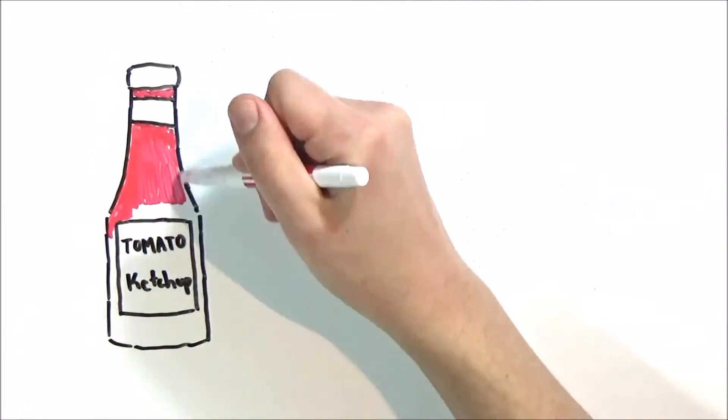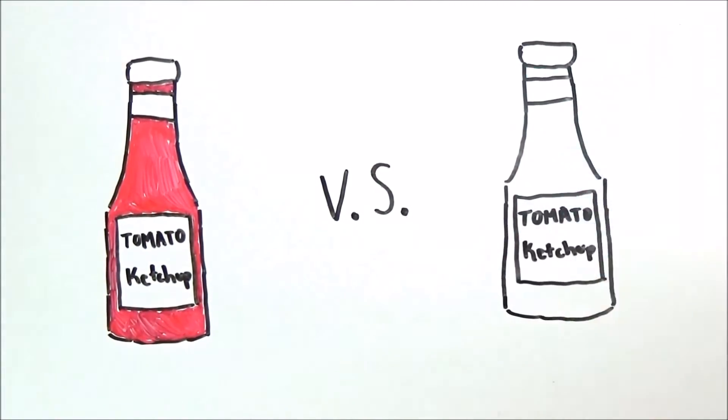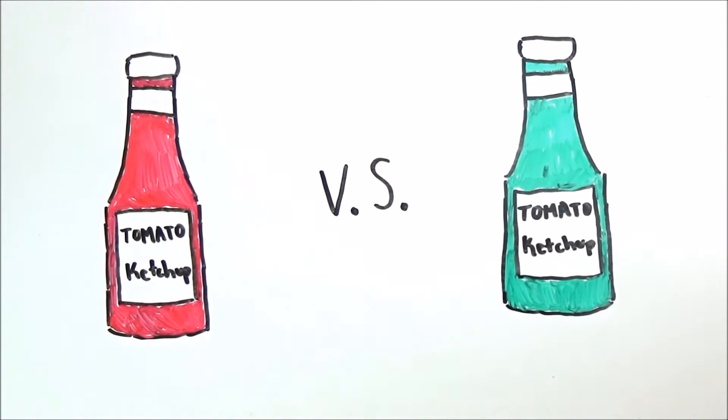Is it possible for two people to see the exact same object as completely different colors? Before we answer this question, we need to know how vision works.